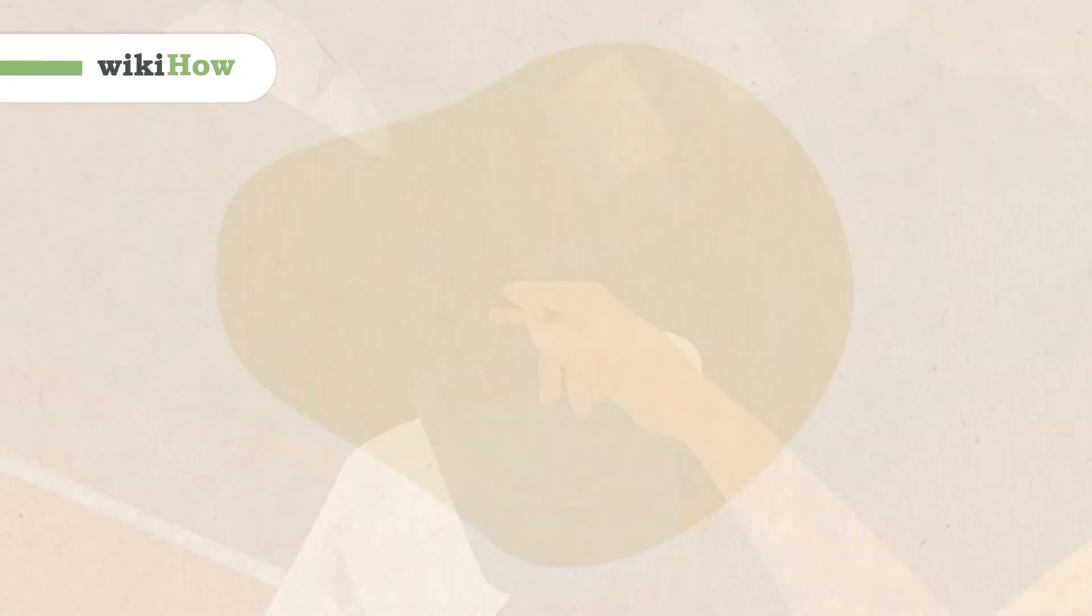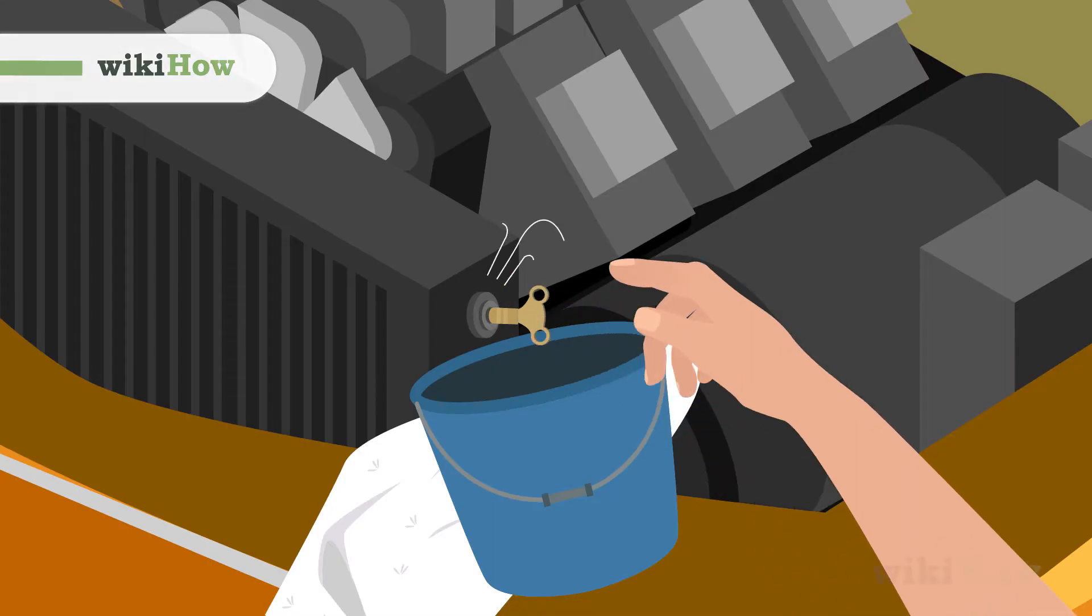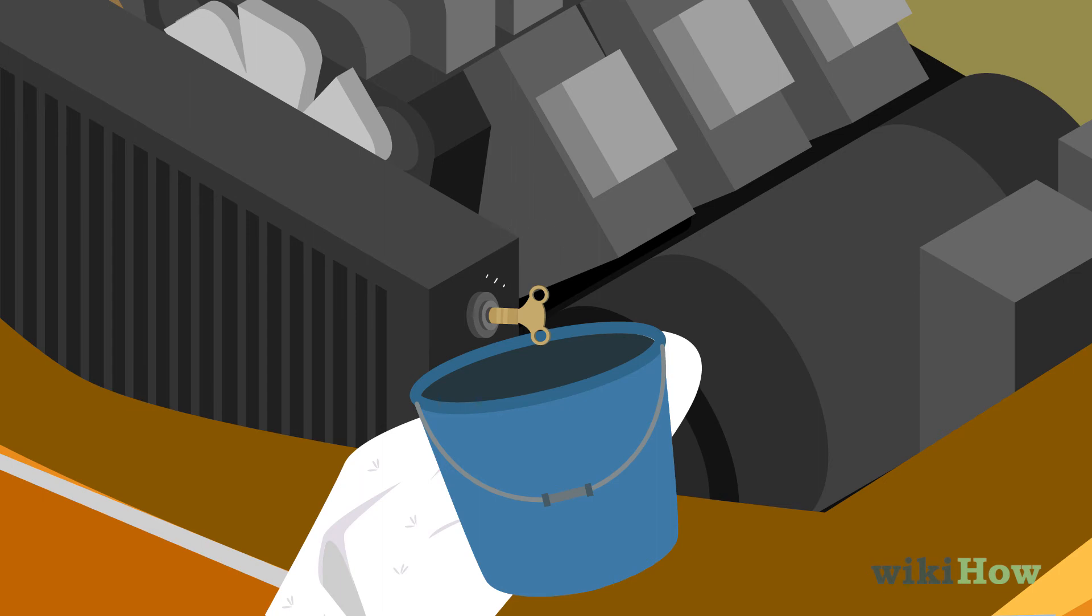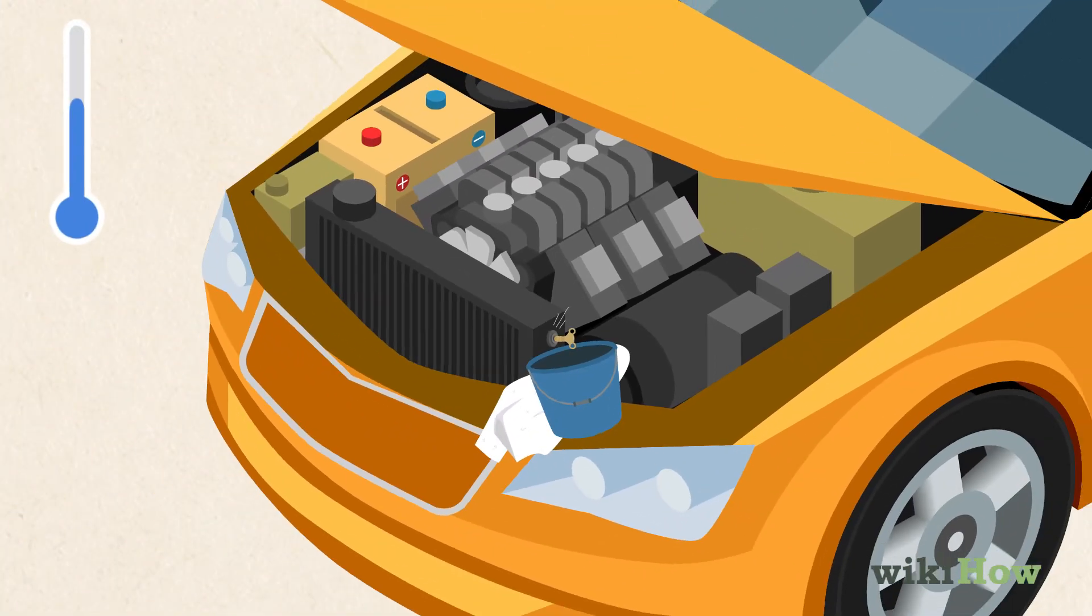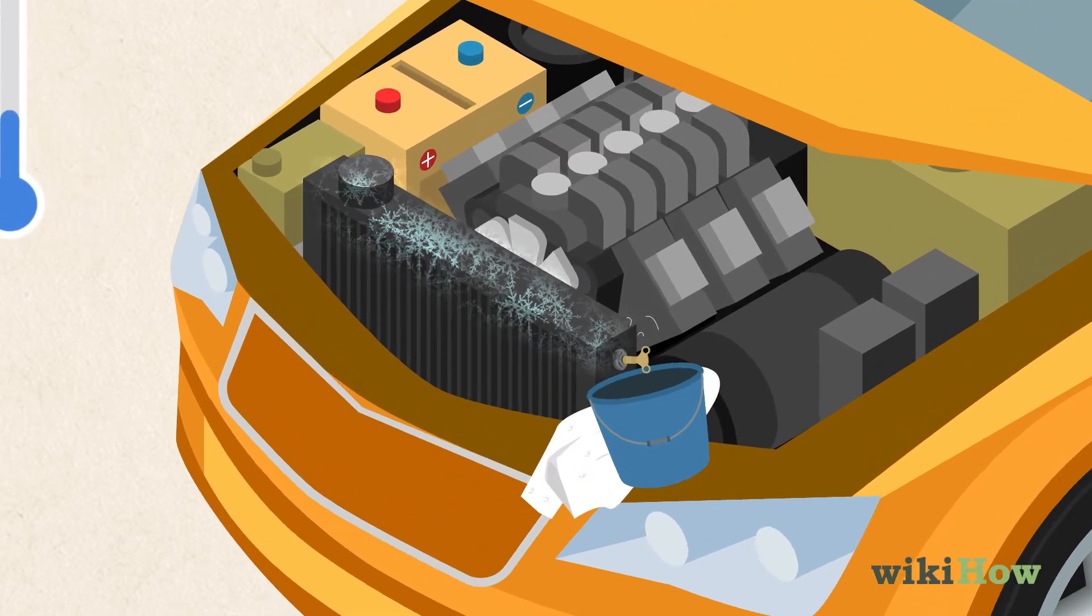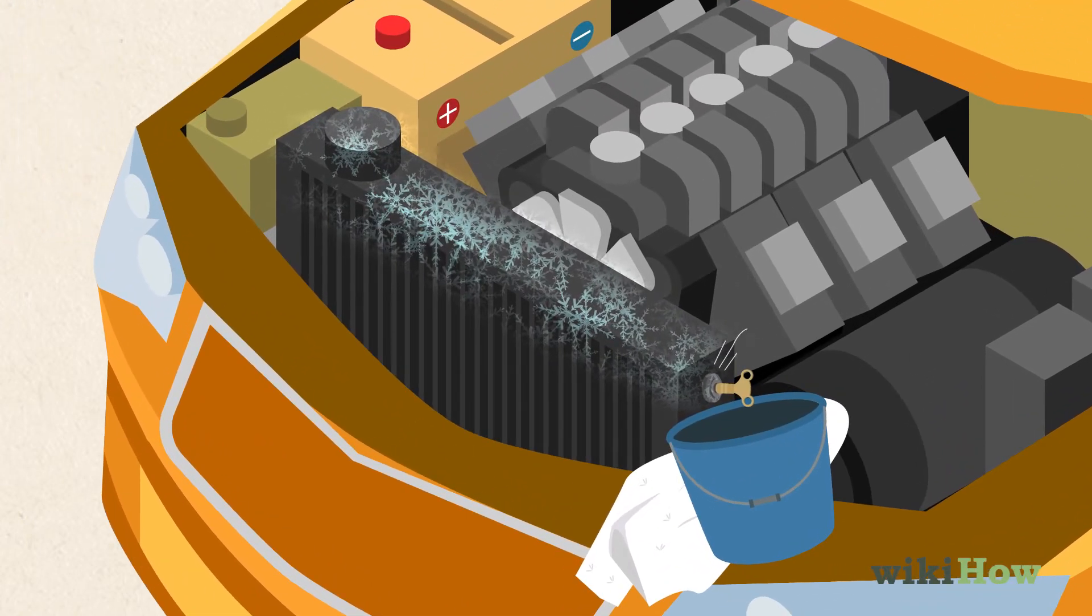Bleeding a radiator refers to the process of releasing the excess air that gets trapped in your car's pipes over time. Trapped air will cause the top of your radiator to become cold. So bleed your radiator whenever you notice the pipes at the top becoming much cooler than the pipes at the bottom.